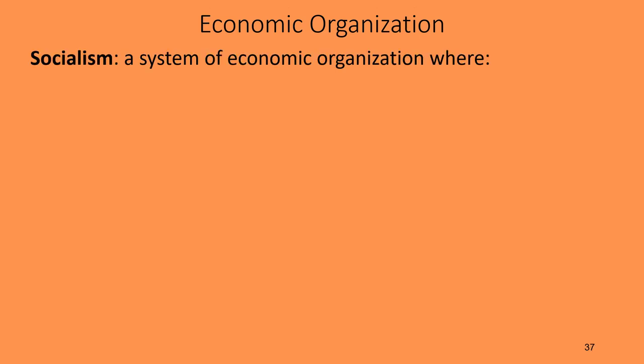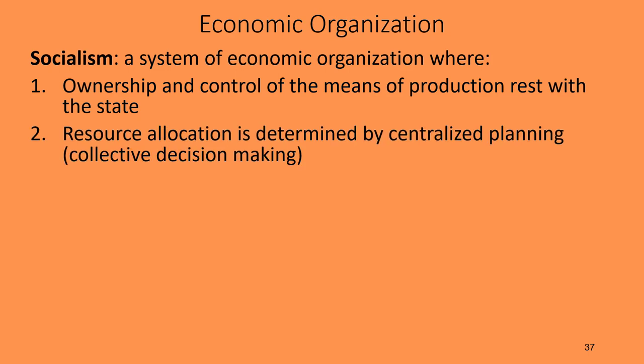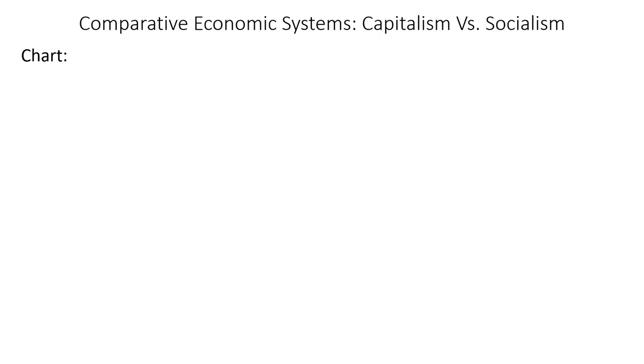Socialism is a system of economic organization where ownership and control of the means of production rests with the state. The government decides what's going to be produced and how. Who gets what is determined by centralized planning — also called collective decision making — where a group of government officials relying on public sector decision making resolve the basic economic questions.